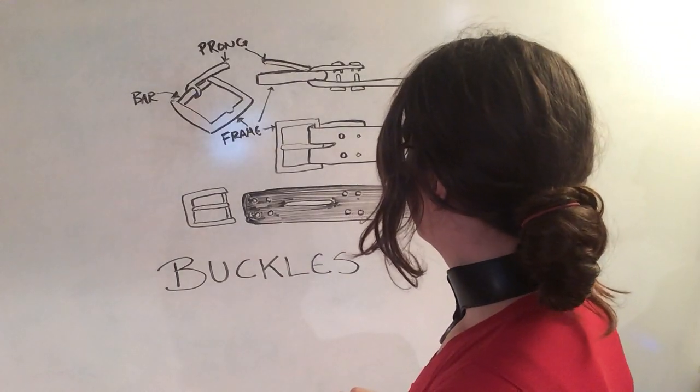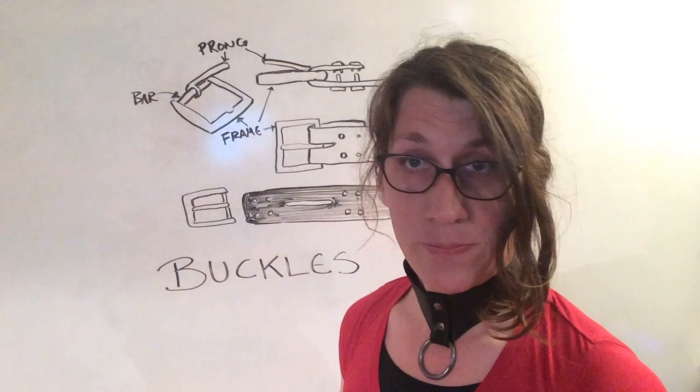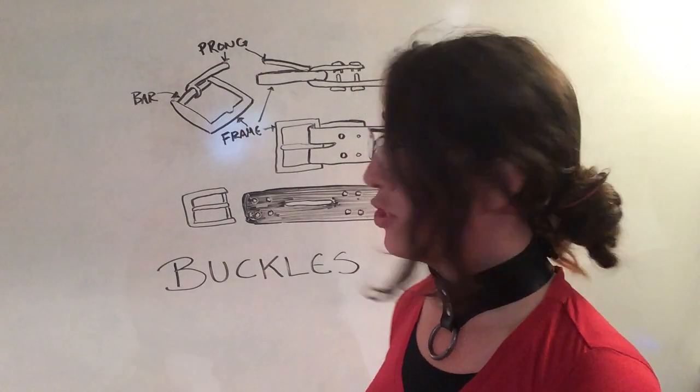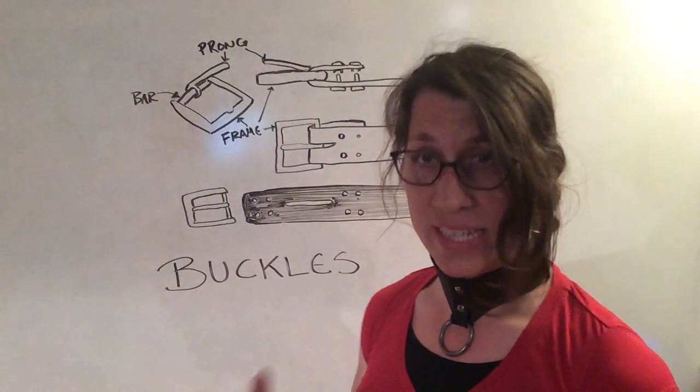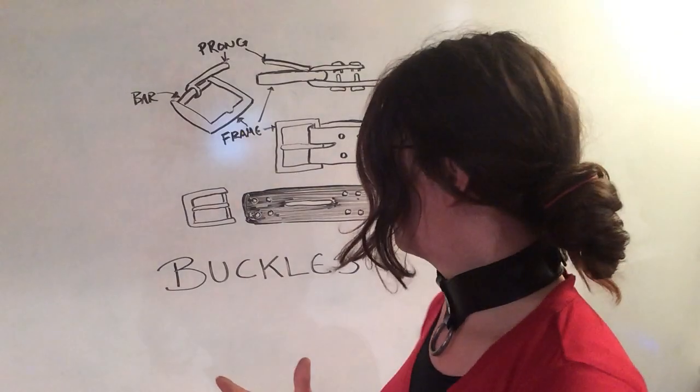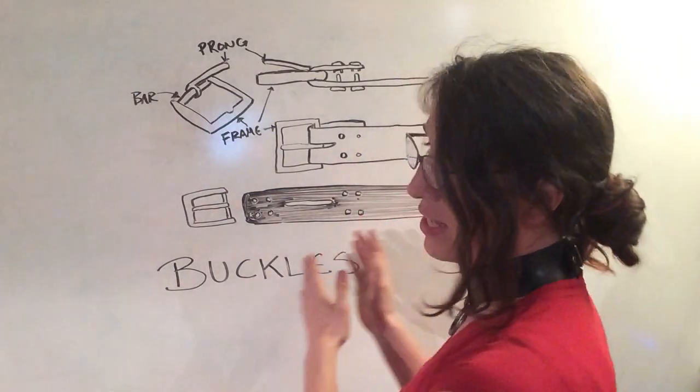Oftentimes you'll see that there's just one rivet. Sometimes there'll be two, and depending on the style of the buckle, you may need to include a keeper, which is why we have a set of four.